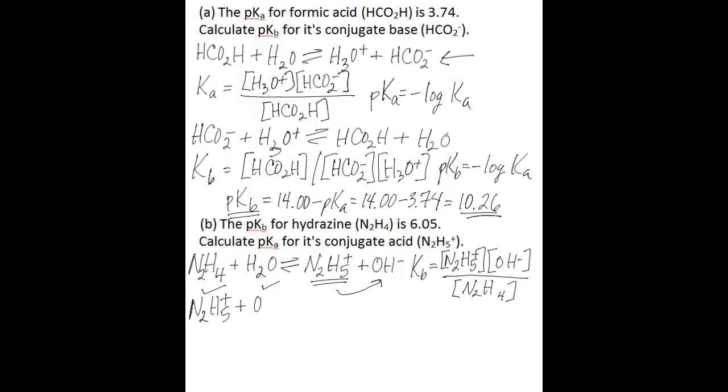We have the conjugate acid of hydrazine plus hydroxide going to hydrazine plus water. So all you need to know for this problem to go directly from pKb to pKa is that pKa equals 14.00 minus pKb. So you're subtracting from the 14.00 the 6.05 pKb value that you're given as part of this problem.